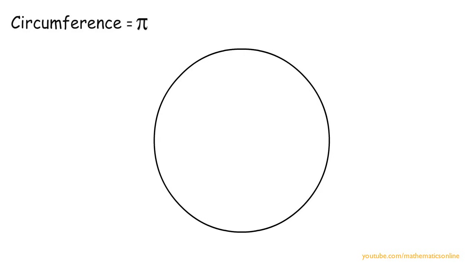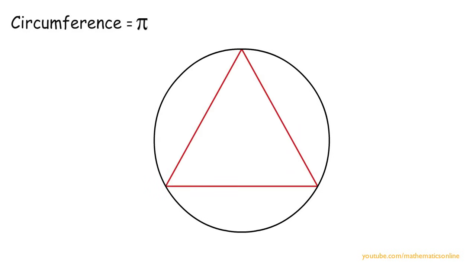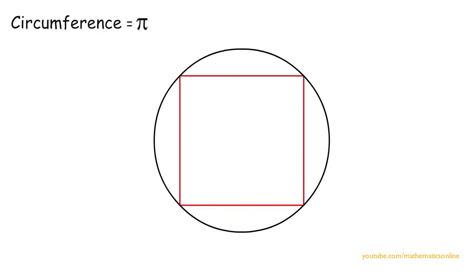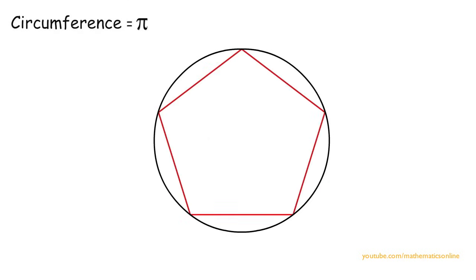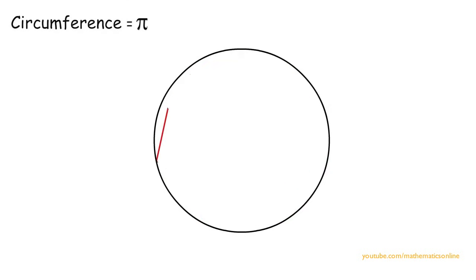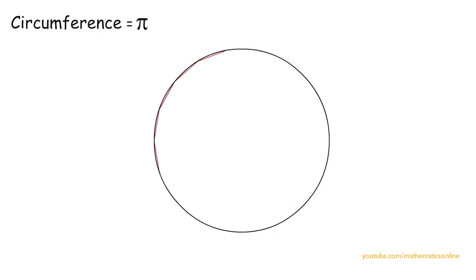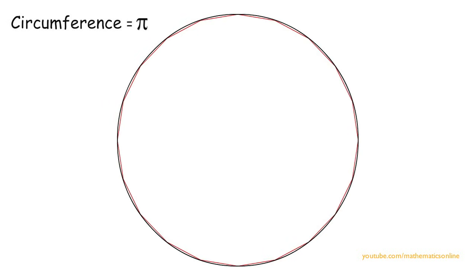Next, inside the circle we inscribe a polygon and increase the number of sides repeatedly. What we can see is that every time we increase the number of sides of the polygon, the more it resembles the shape of the circle. Specifically, the perimeter of the polygon approximates the circumference of the circle.